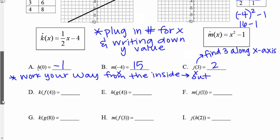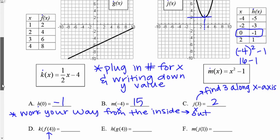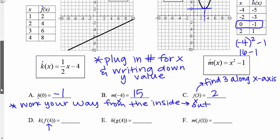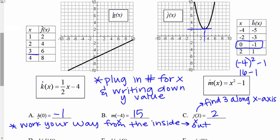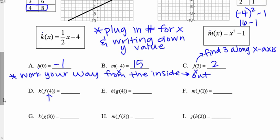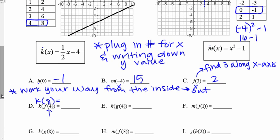For example, d is asking me to do k of f of four. I'm going to start by doing f of four. f is this first table — f of four means I plug in four for x and get a y value. f of four is eight. Now I'm doing k of eight. k is that equation: one half x minus four. So k of eight is one half times eight minus four, which is four minus four, which is zero.